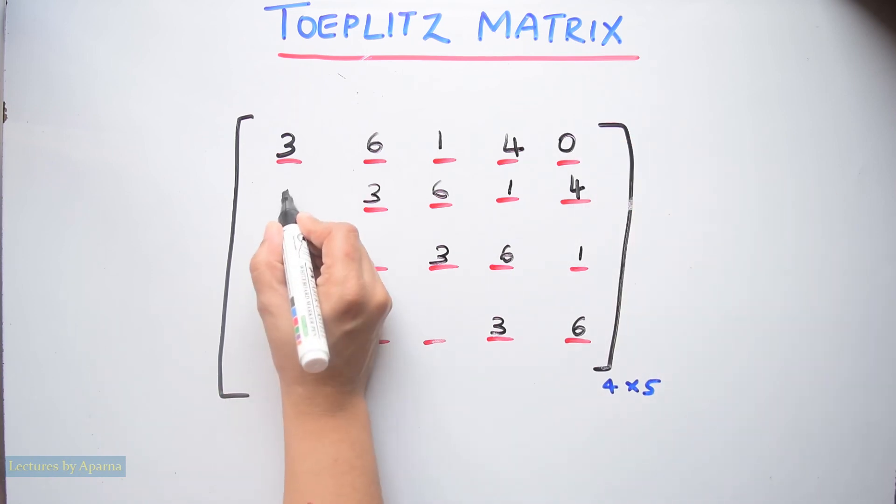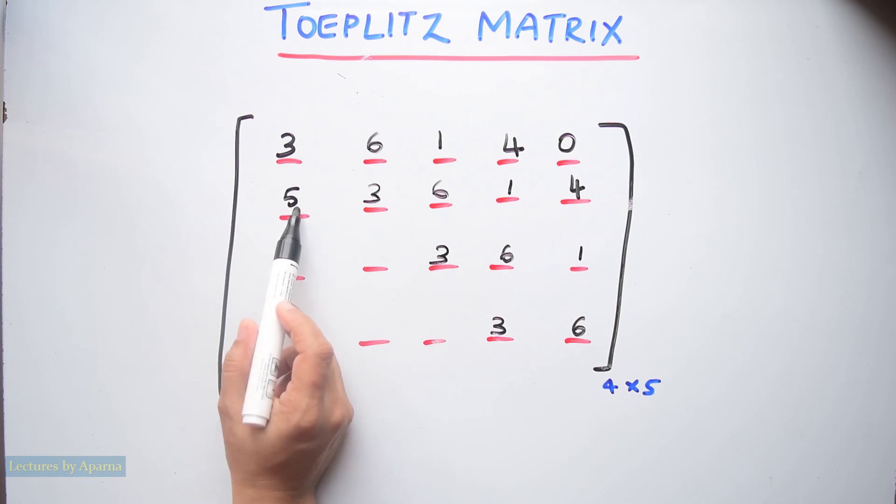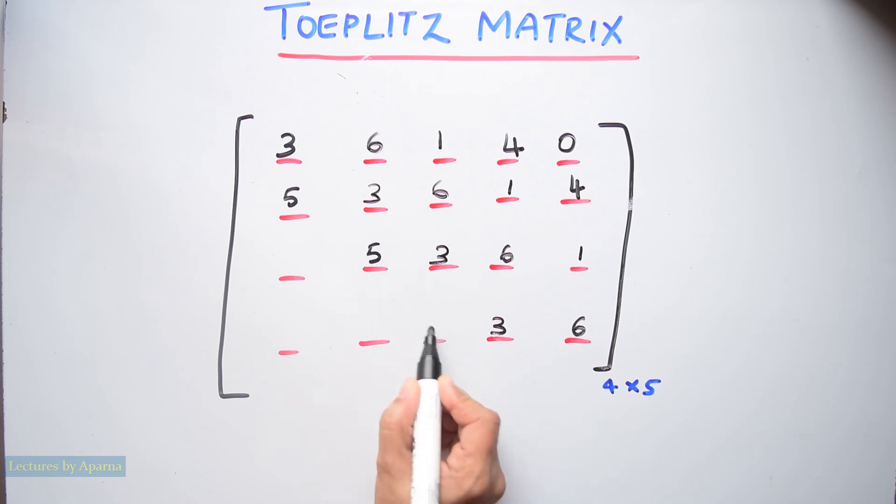Next I am choosing a number 5 here. I have to write 5 in these 2 places to make it a Toeplitz matrix. So 5 and 5. Next I am choosing a number 2. I have to fill this position with number 2. And I am putting number 8 here.